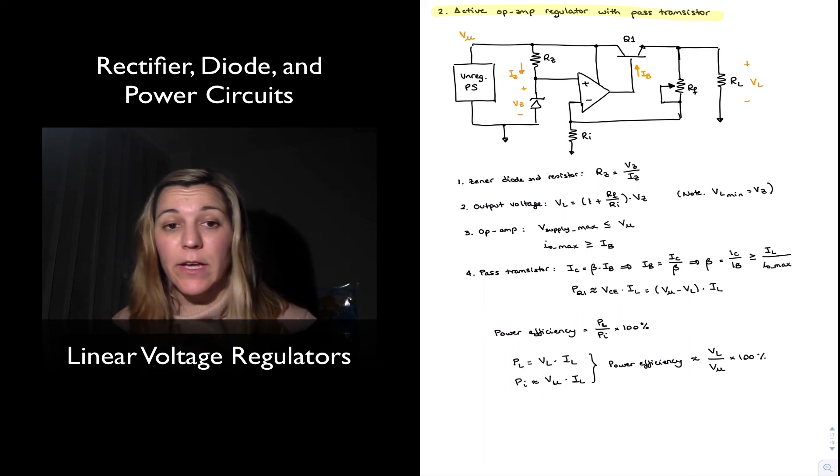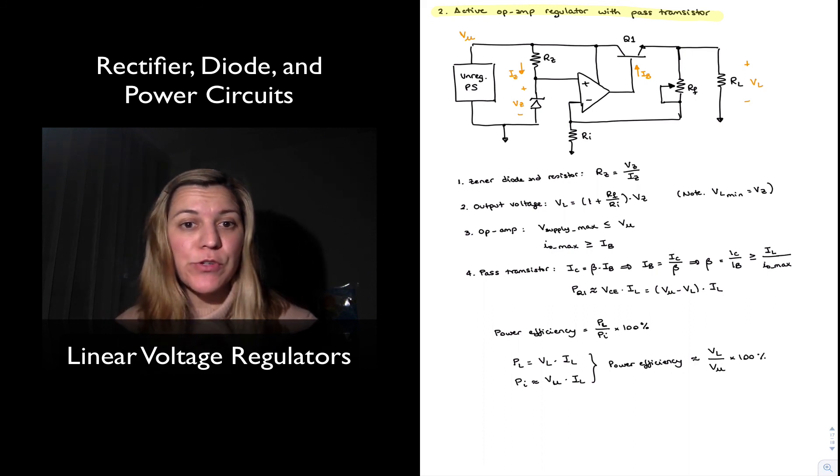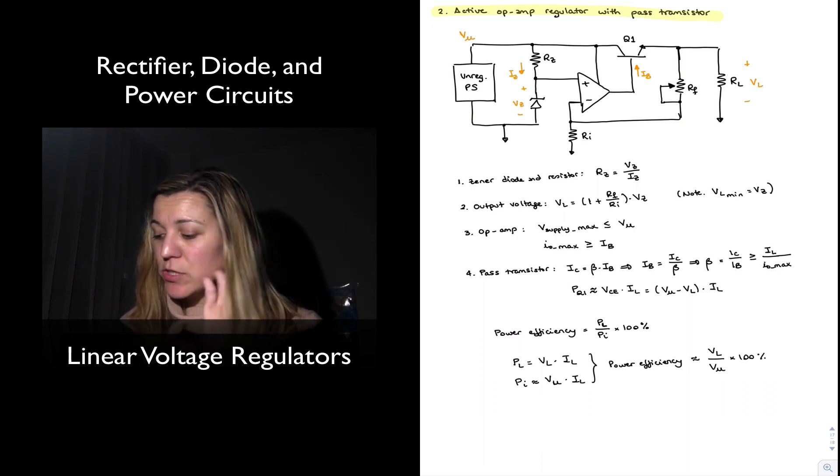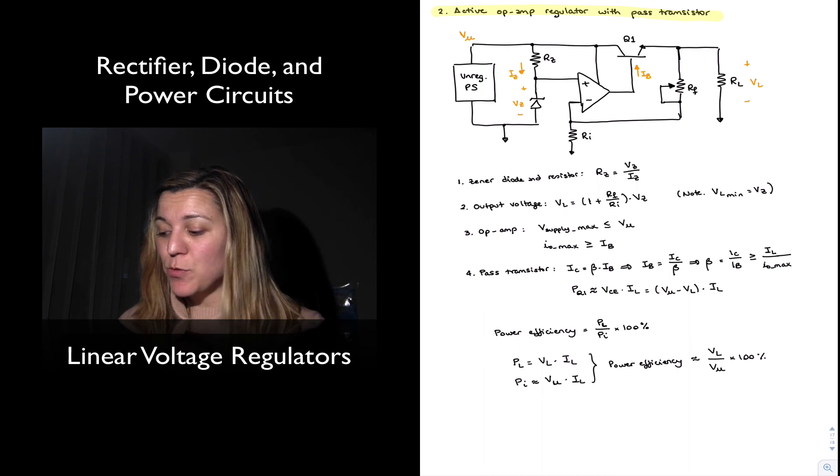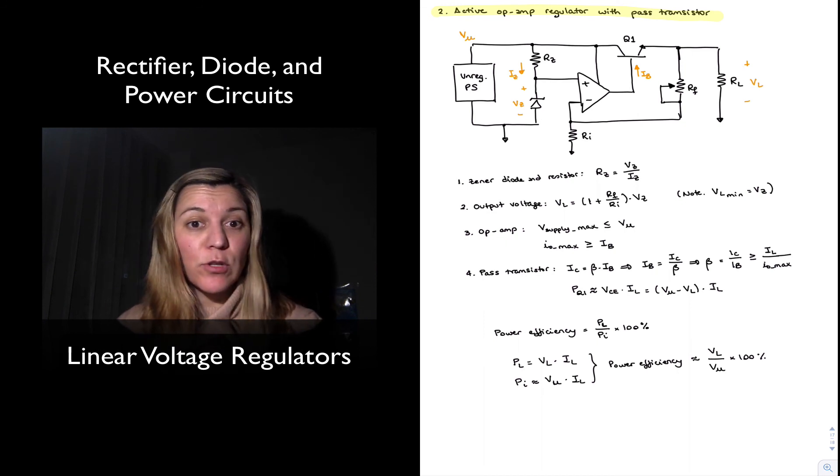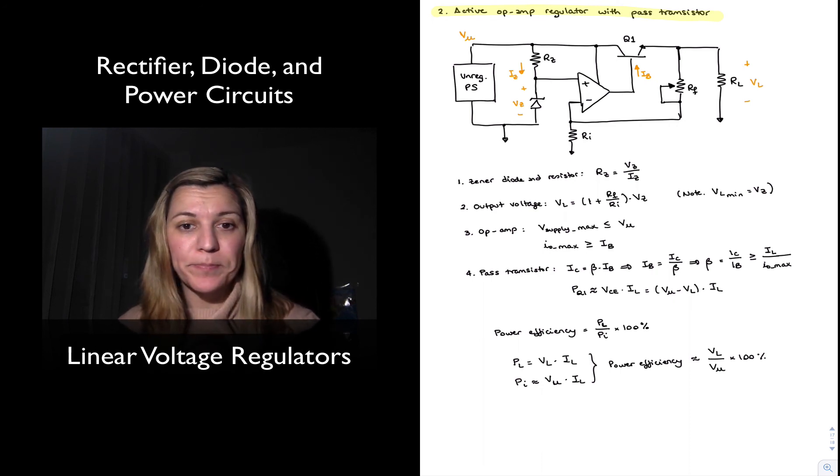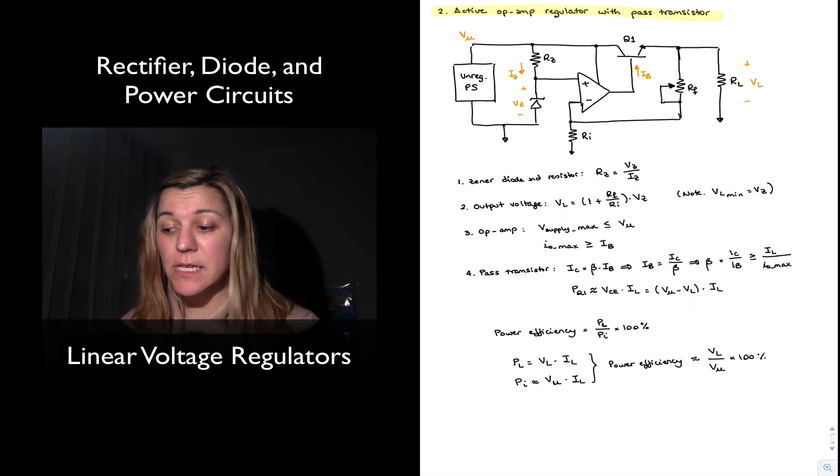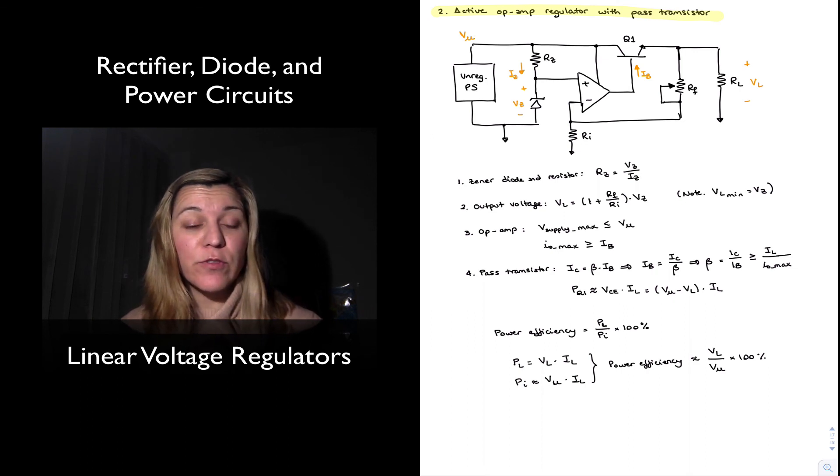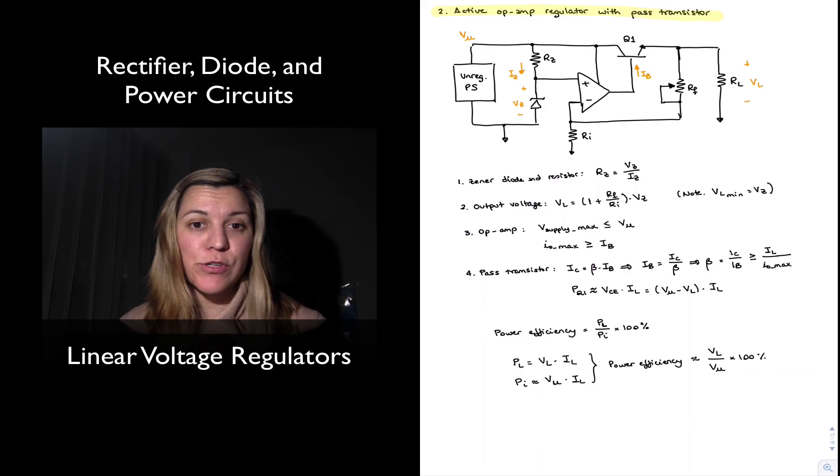And this is why low dropout regulators are going to have better power efficiency, because essentially the difference between the unregulated voltage and the regulated load voltage is going to be smaller, and so this ratio is going to be closer to one. And so this is it as a brief overview to linear, active linear regulators. Thank you.